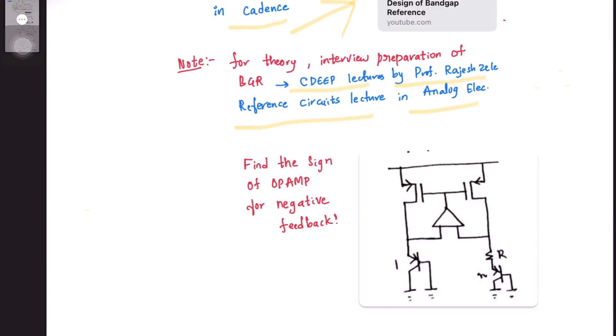One of the questions asked in the interview based on the opamp is this: given a BGR circuit, they asked us to find the sign convention of the opamp inputs for this network to be in negative feedback.